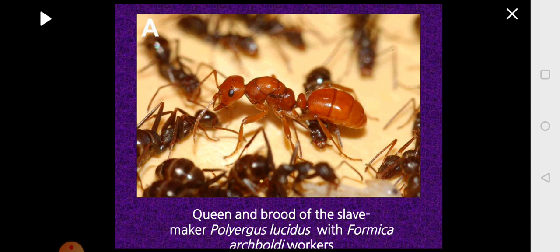Here there is another interesting behavior seen in ants which is called slave raid. There are two ant species involved: one is Polyergus lucidus and the other is Formica accoldi. This Polyergus lucidus will go to the Formica accoldi colony and they will confuse the defenders of the Formica accoldi.